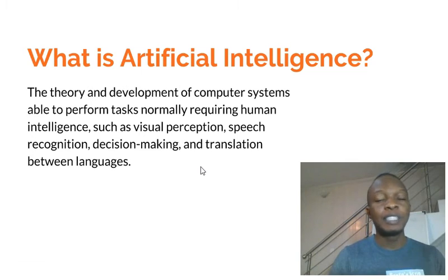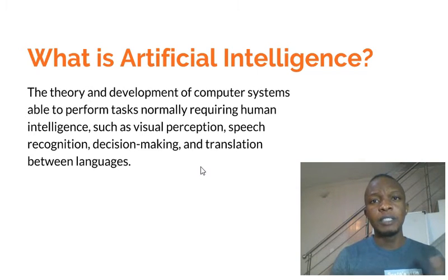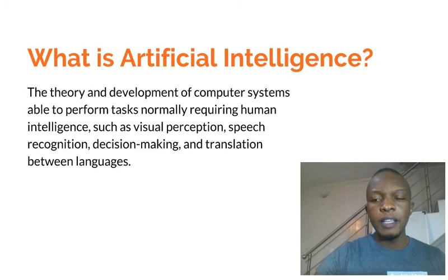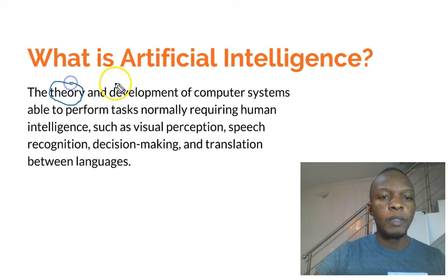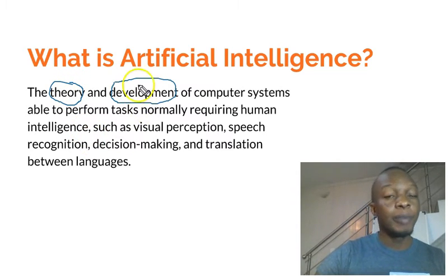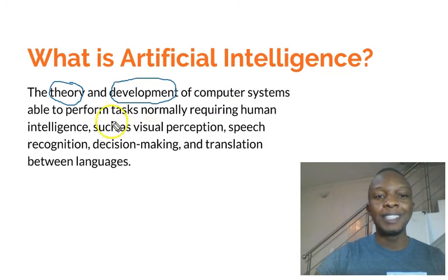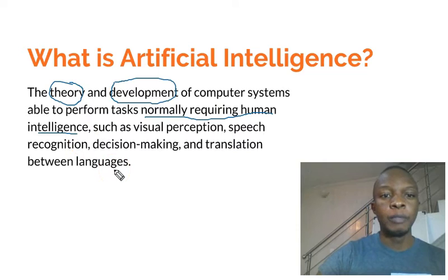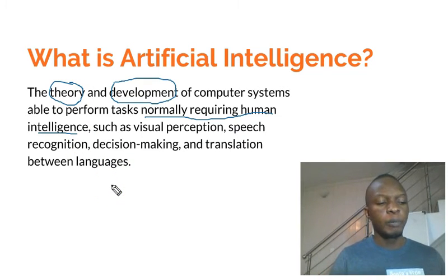Tasks requiring human intelligence include visual perception, speech recognition, decision making, and translation between languages. Machine learning has two parts: first it's a theory — like what we are doing right now — and then it's also a practical development. It involves developing computer systems able to perform tasks normally requiring human-level intelligence, which is what makes the distinction from what normal animals do.